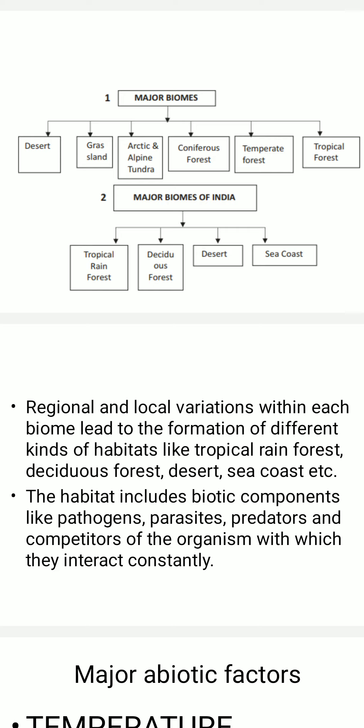There will be regional and local variations within each biome leading to the formation of various habitats. The habitat refers to the dwelling place where the organism lives — for example, fish lives in water, earthworms and ants live in burrows, birds have an arboreal habitat in trees, and other organisms are on land.